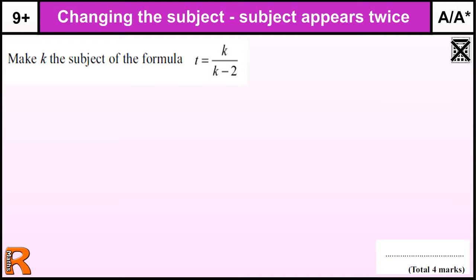Changing the subject of a formula where the subject appears twice. This is Grade A, A-star, GCSE, or Level 9 plus National Curriculum. Now, changing the subject of a formula is normally fairly straightforward. If we're trying to make K the subject, we just move everything else to the other side. The only problem here is we have K in two places, so we need to get K into one place.